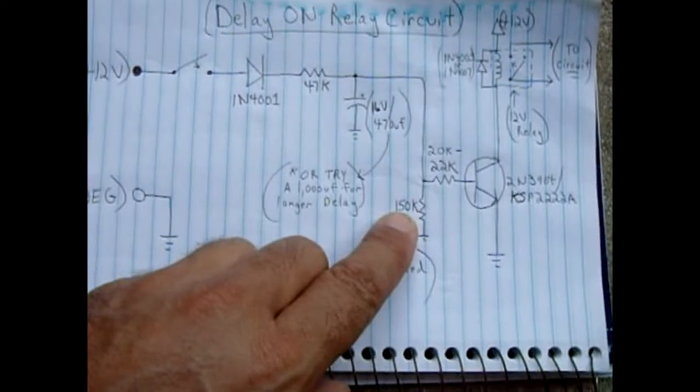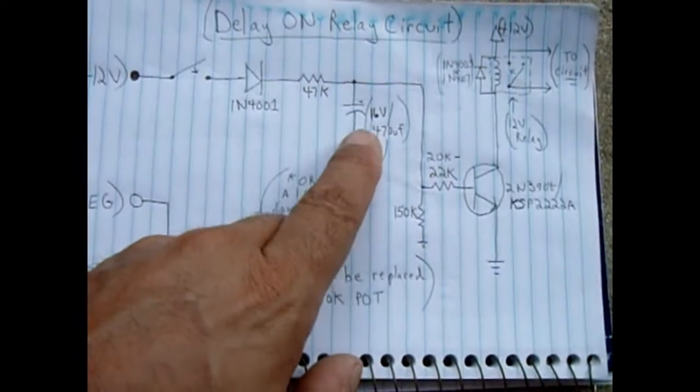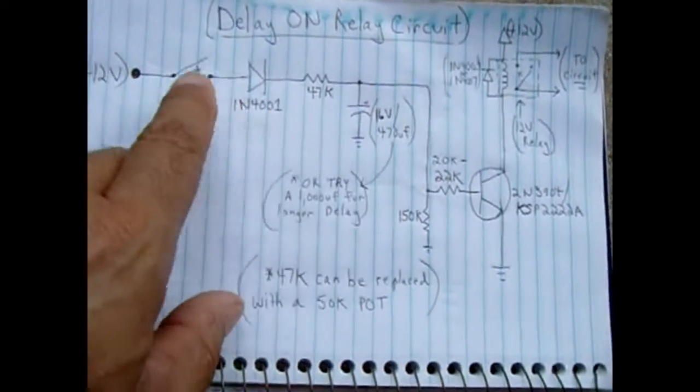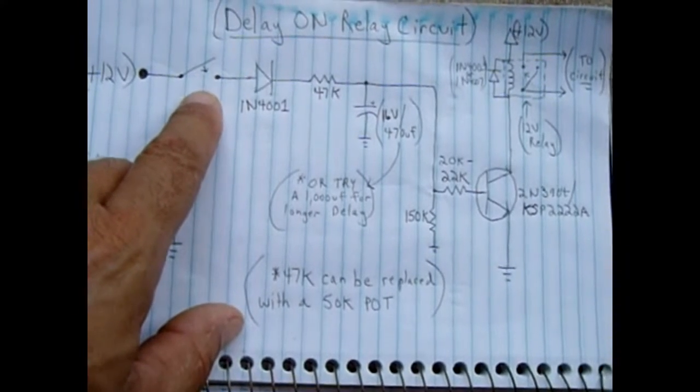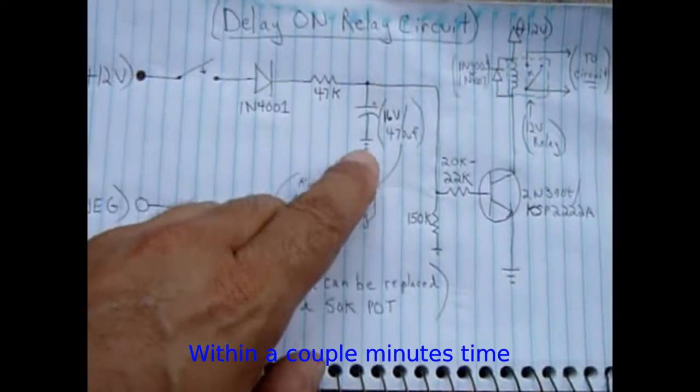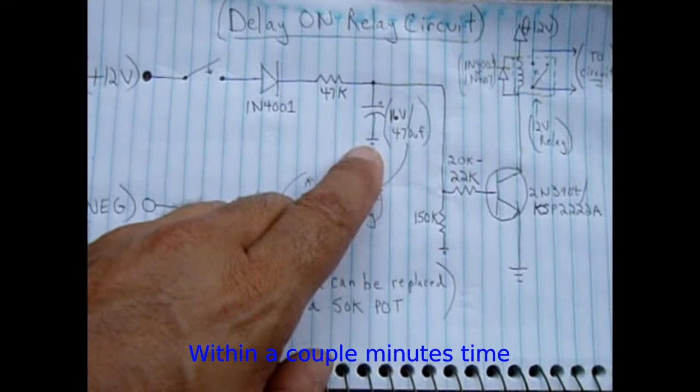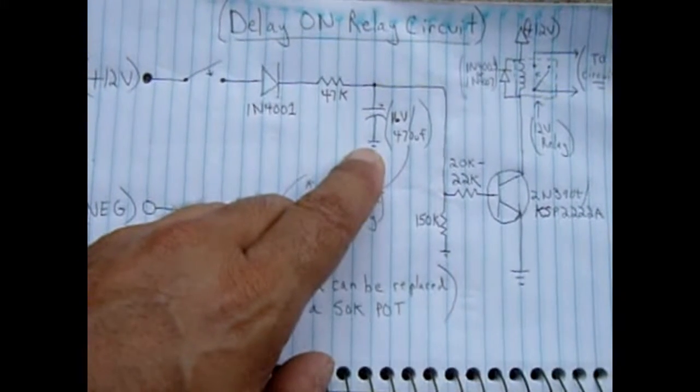The purpose of the 150k resistor is to drain down the capacitor after the circuit has been deactivated. This way, the next time you activate the circuit there's no residual charge left over in the capacitor and you'll have the full duration before the circuit will trigger.